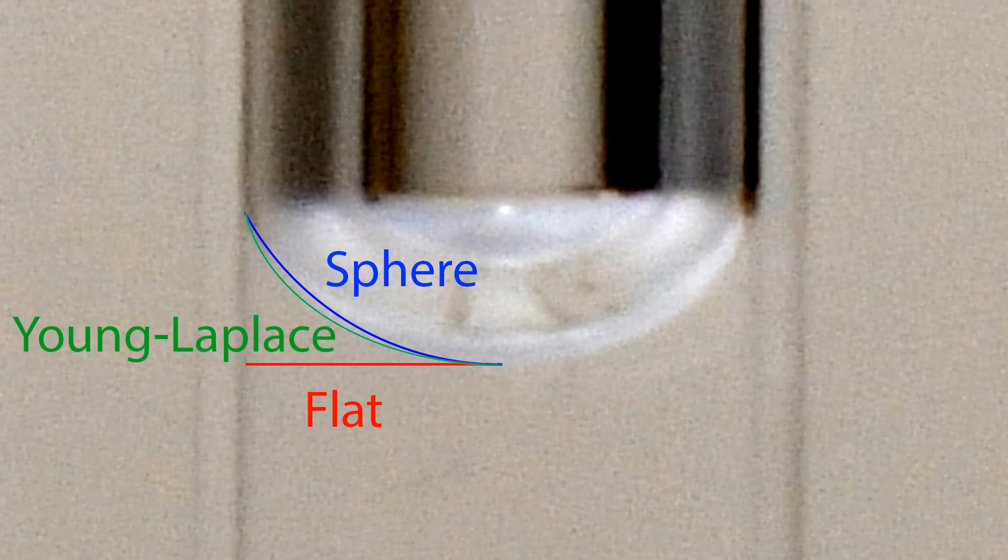The shape of the meniscus at the top of the sample affects the shape factor significantly. A horizontal line model is not sufficient. A spherical cap fits the meniscus better. However, for a good fit, we need to use the Young-Laplace model shown here for chloroform.